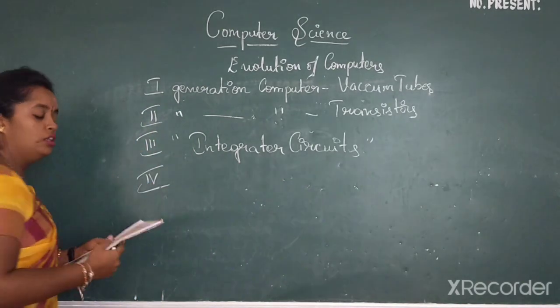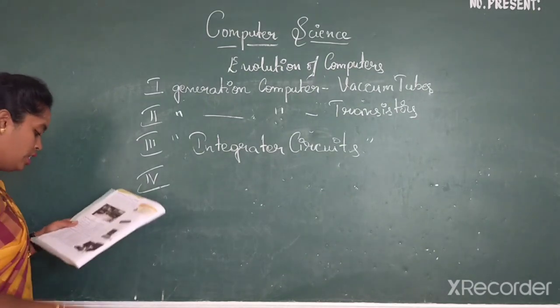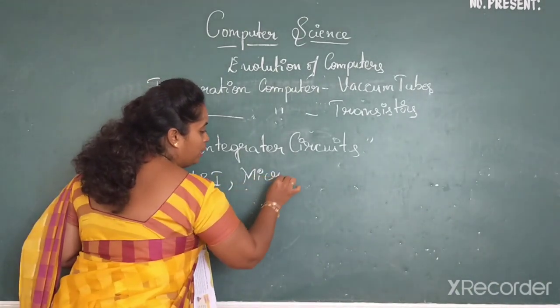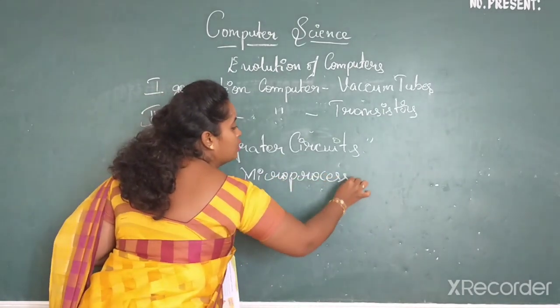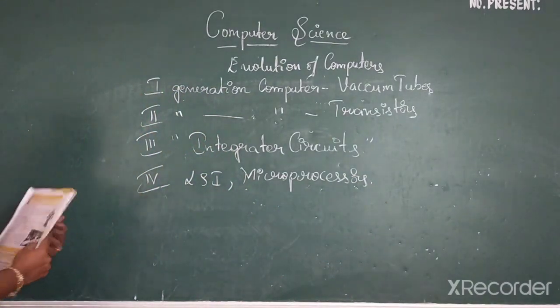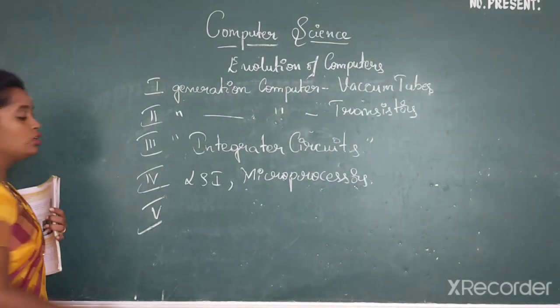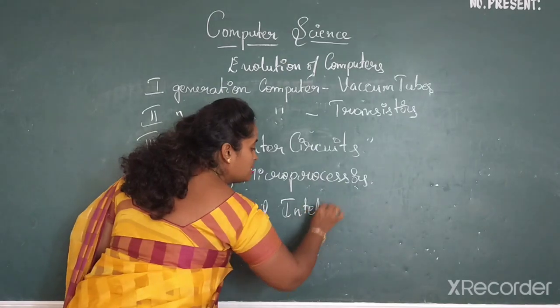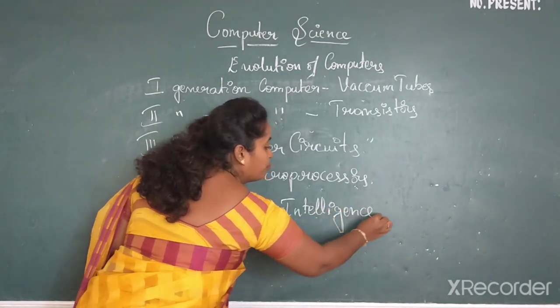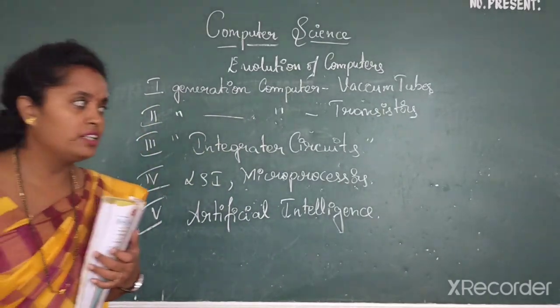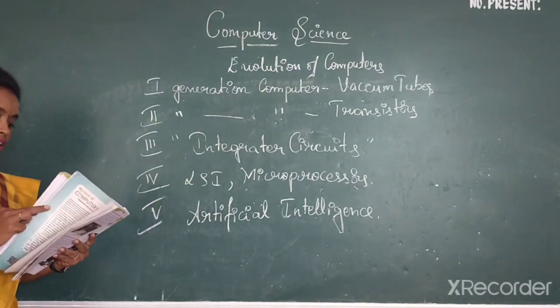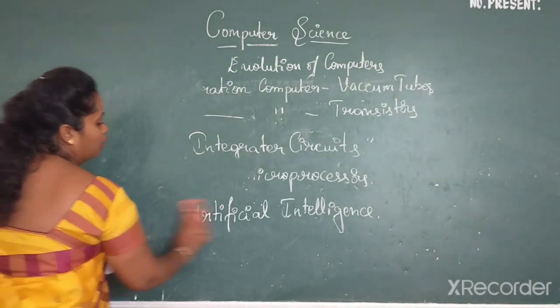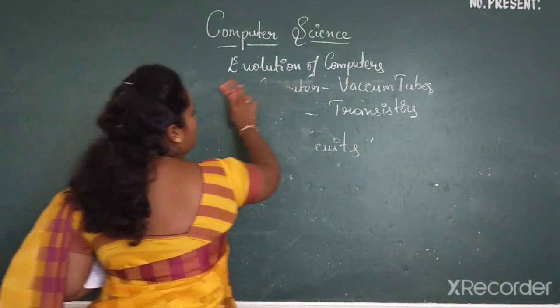In fourth generation, a little advanced features wherein LSI, that's your large-scale integration and microprocessors were used. Then next one is your fifth generation computers, wherein your artificial intelligence comes to place. Example is, these are being used in laboratories, scientific research laboratories and for developing the robots.